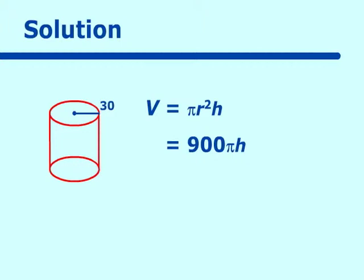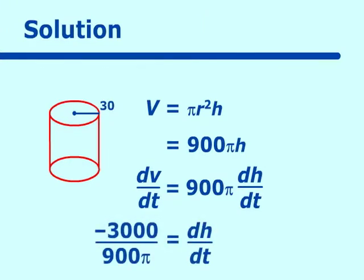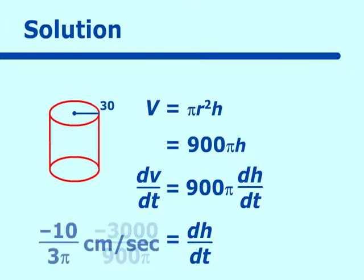When we take the derivative, dV/dt equals 900π dh/dt. We know dV/dt is negative 3,000, so we divide that by 900π to get dh/dt. So dh/dt is equal to 10 over 3π centimeters per second.